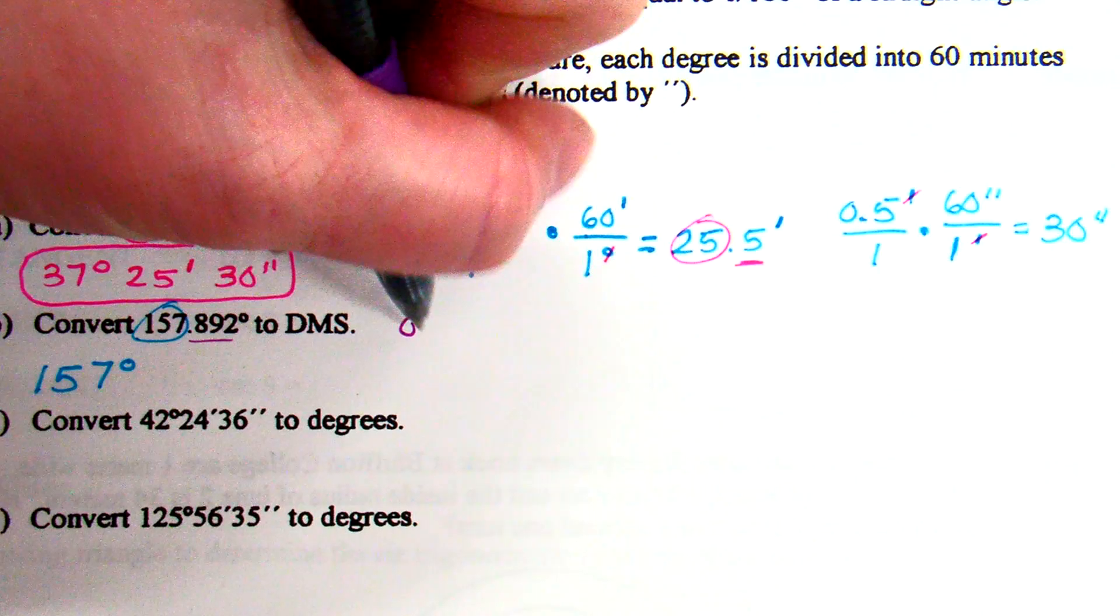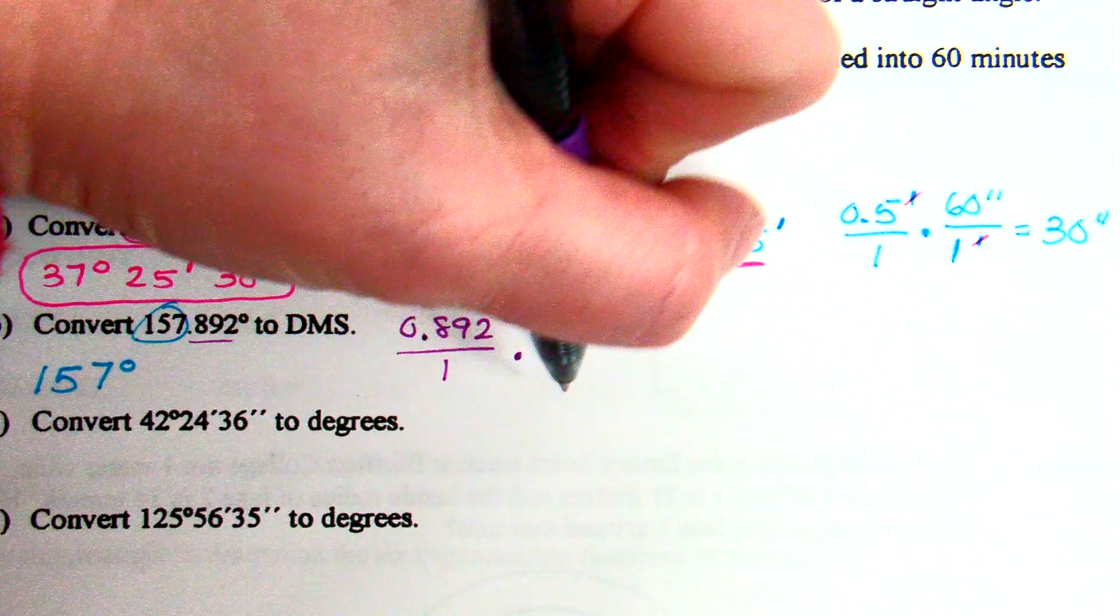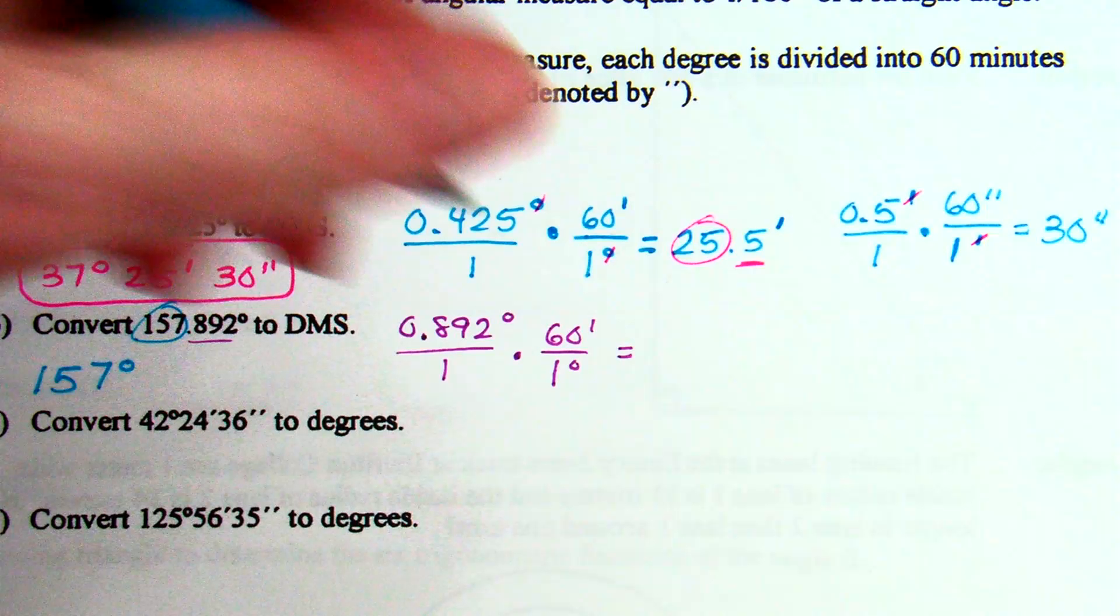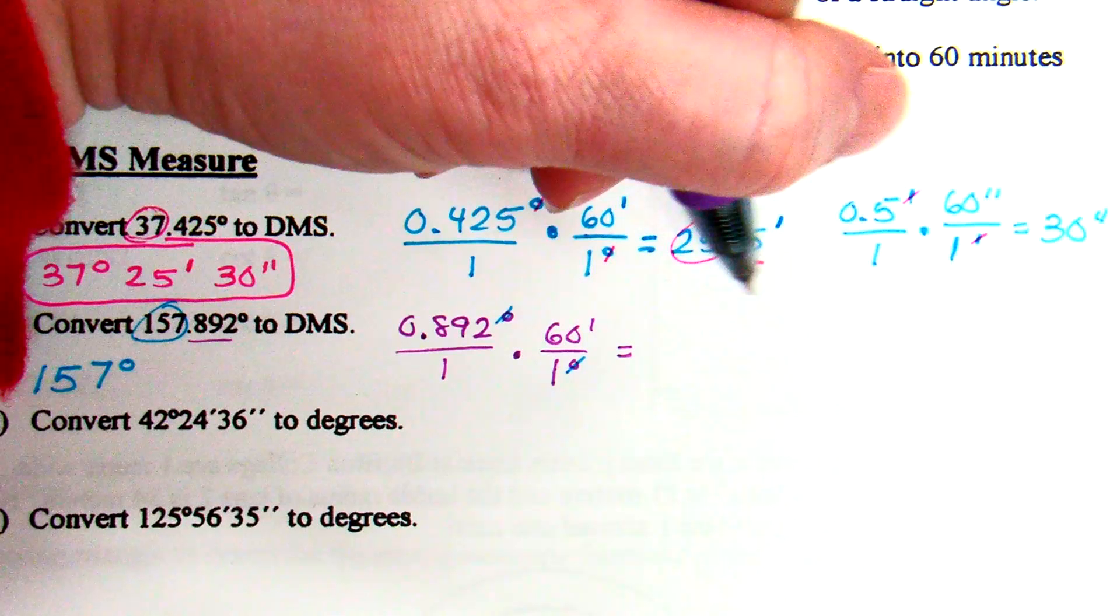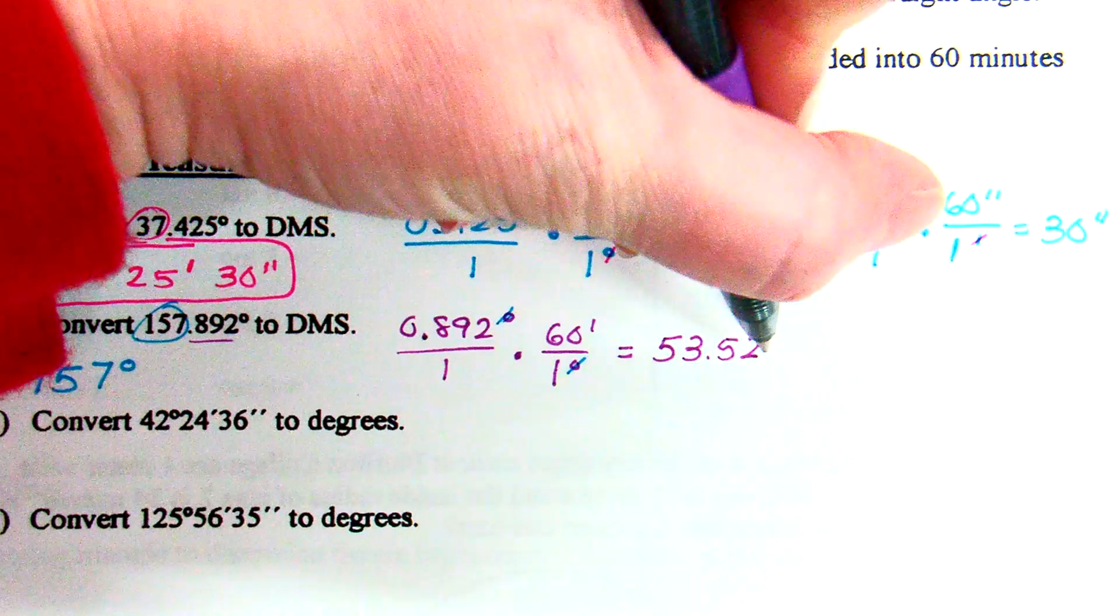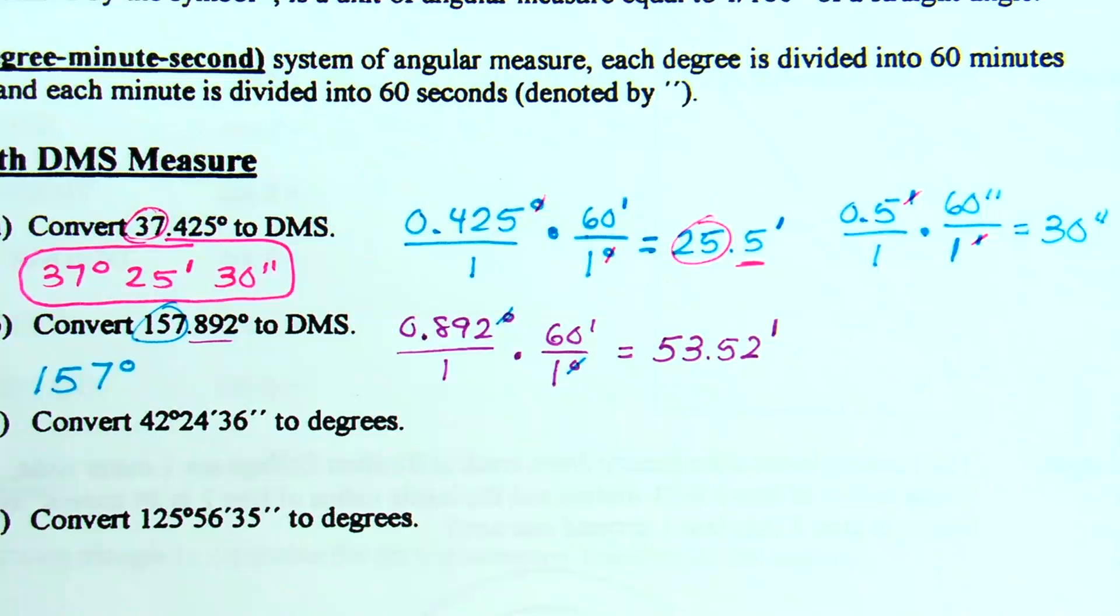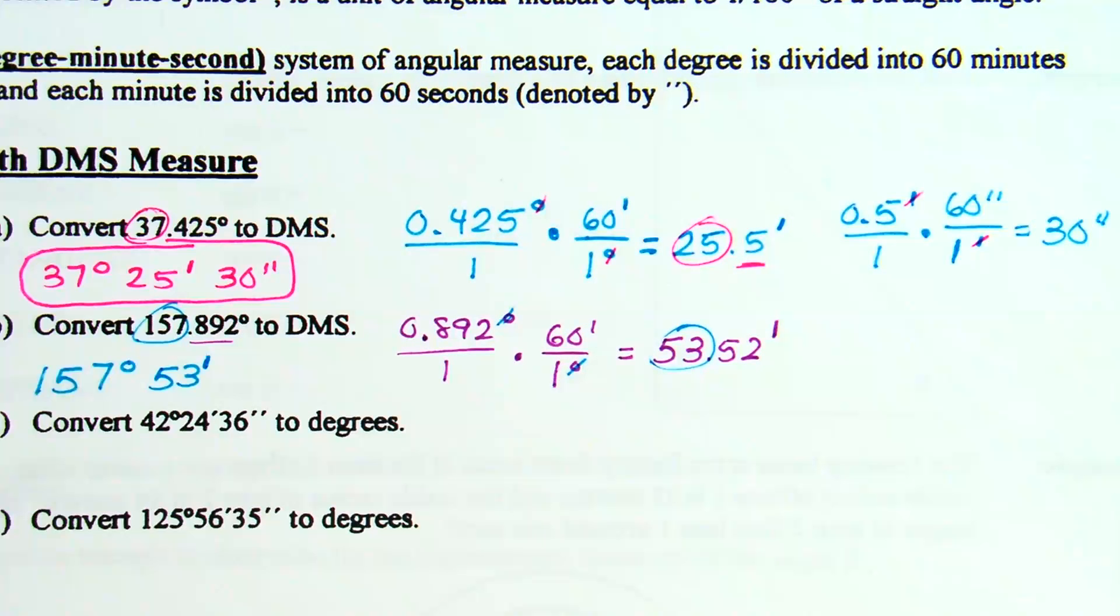Next part I'm going to do is I'm going to take the decimal here of 0.892. And that is 0.892 degrees. And what am I going to do with that? Multiply by 60, because we know 1 degree is 60 minutes. 0.892 times 60 is 53.52, and that officially is 53.52 minutes. So what's the next part of my answer? 53 minutes.